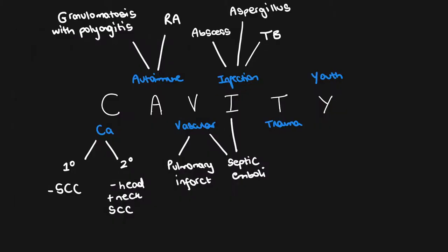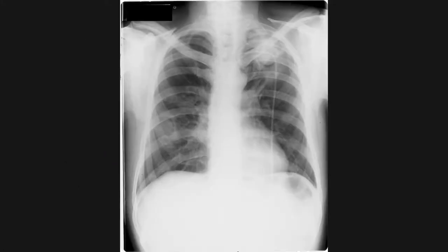Now we're on to I for infection, which covers abscesses, aspergillus, and TB. In immunocompromised patients you should also think about fungal diseases which can cavitate. On this chest x-ray there are abnormal lung lesions — one in the left upper zone and one in the right mid-zone — and they both demonstrate the air crescent sign, with air seen around the soft tissue lesion in both locations. This is a diagnosis of bilateral aspergillomas.